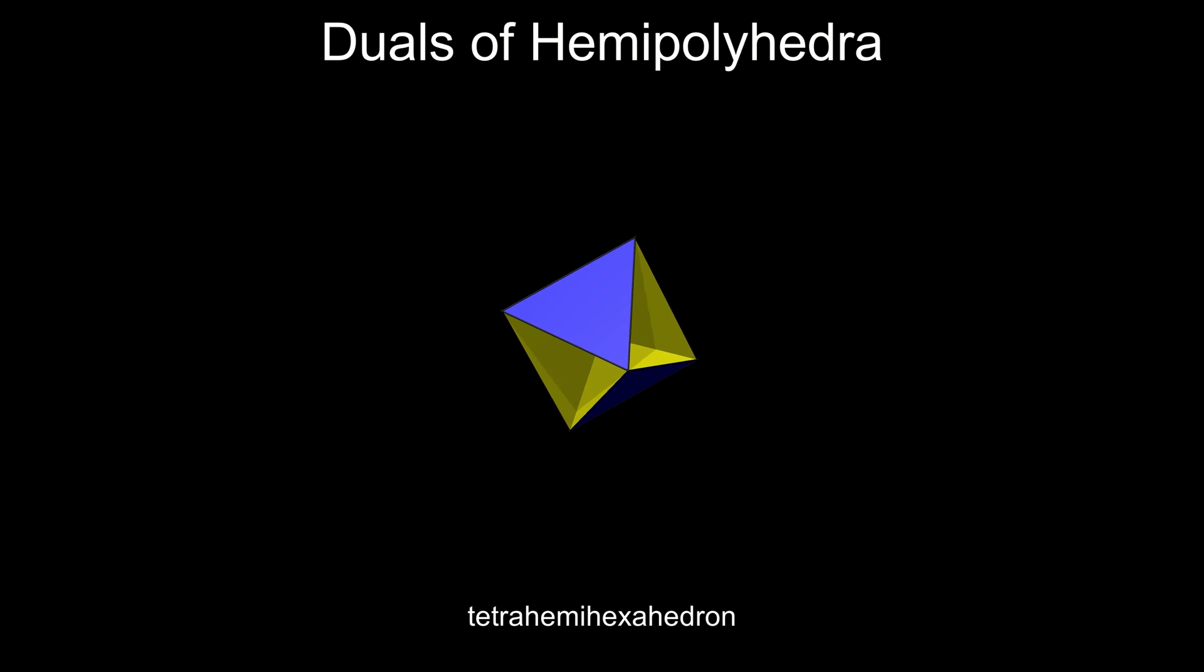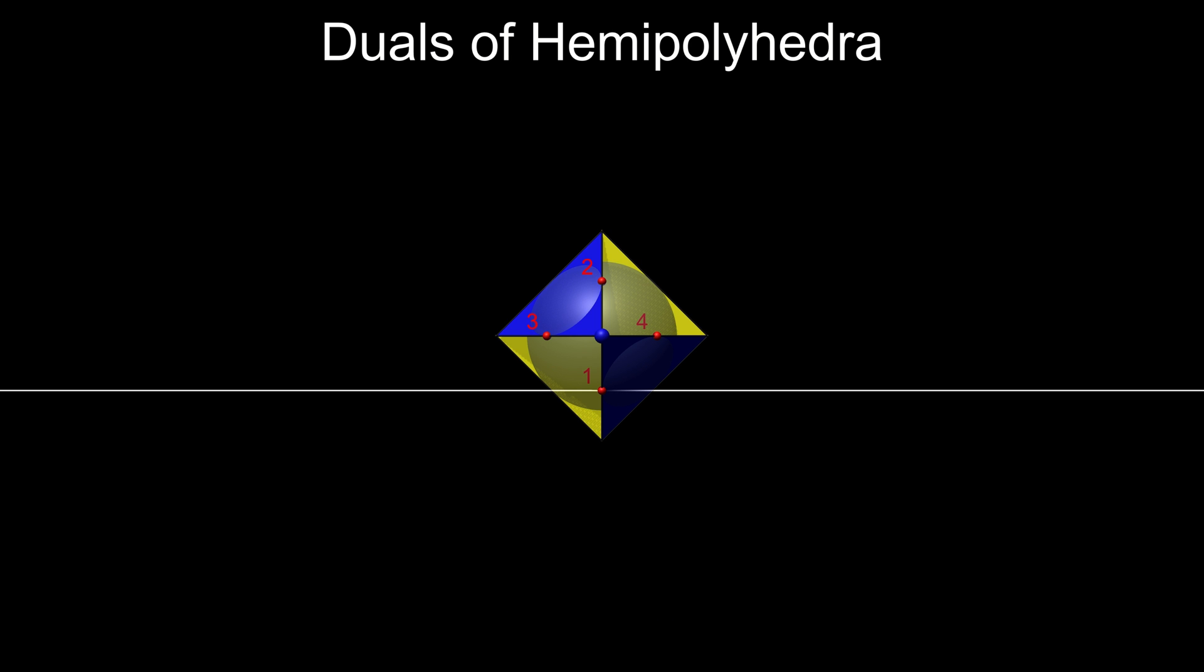However, with a hemipolyhedron, such as this tetrahemihexahedron, this doesn't work. We can draw the tangents, but tangents through points one and two are parallel, so they don't intersect and we can't find a dual vertex. The tangents through points three and four are also parallel, so strictly speaking there is no dual.